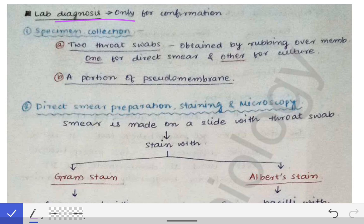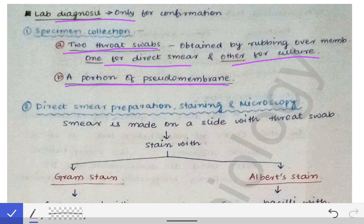When going for a lab diagnosis of any condition in microbiology, you first do specimen collection, and faucial diphtheria is no exception. Two specimens should be collected: first, two throat swabs, and second, a portion of the pseudomembrane. One throat swab is for direct smear preparation and the other is for culture. If the examiner asks why two throat swabs are needed, you should know that one is for direct smear and the other is for culture preparation.